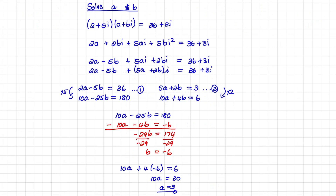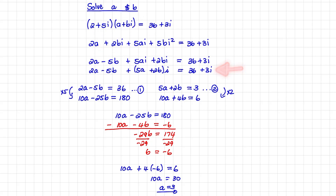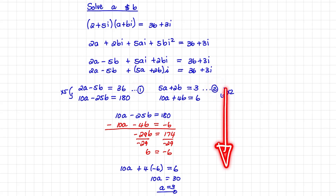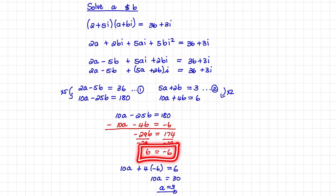A quick recap: we wanted to find the values of a and b in the equation. First we multiplied it out, then we grouped the imaginary and real parts together. We found that 2a − 5b = 36 and 5a + 2b = 3. Solving these two equations simultaneously led to b = −6 and a = 3.